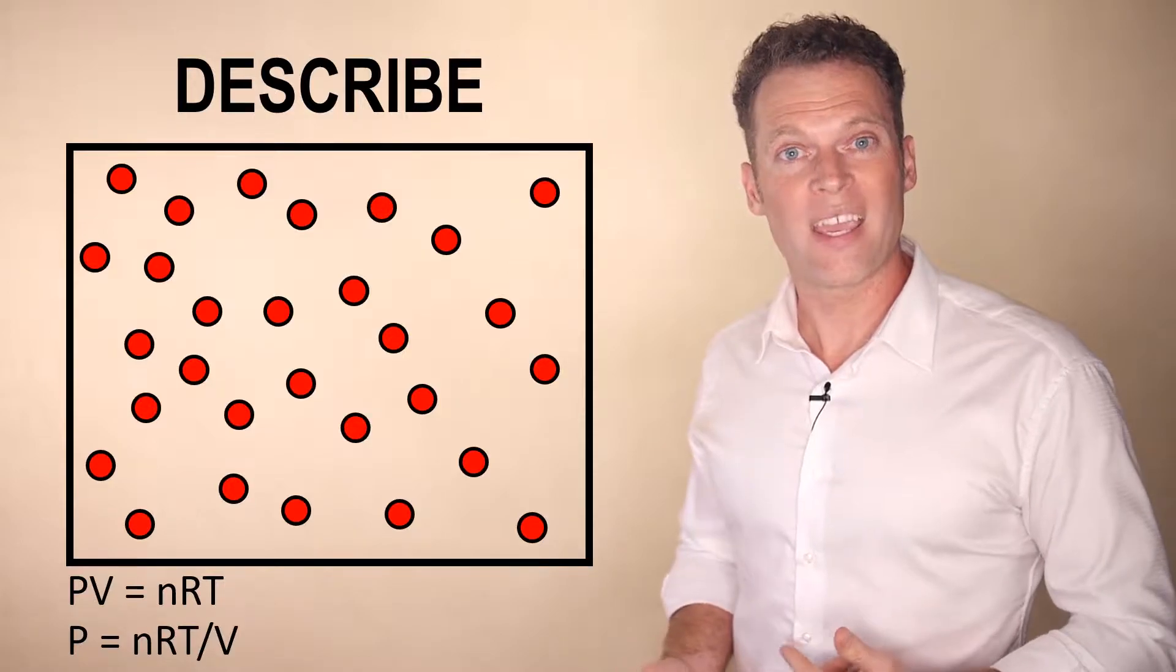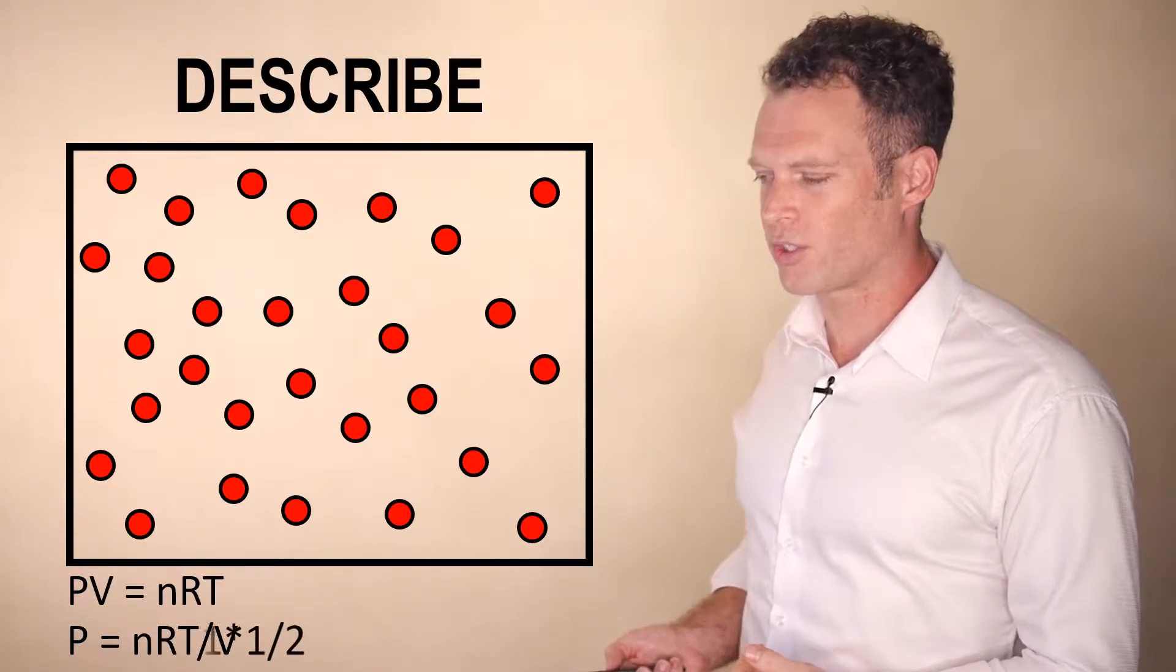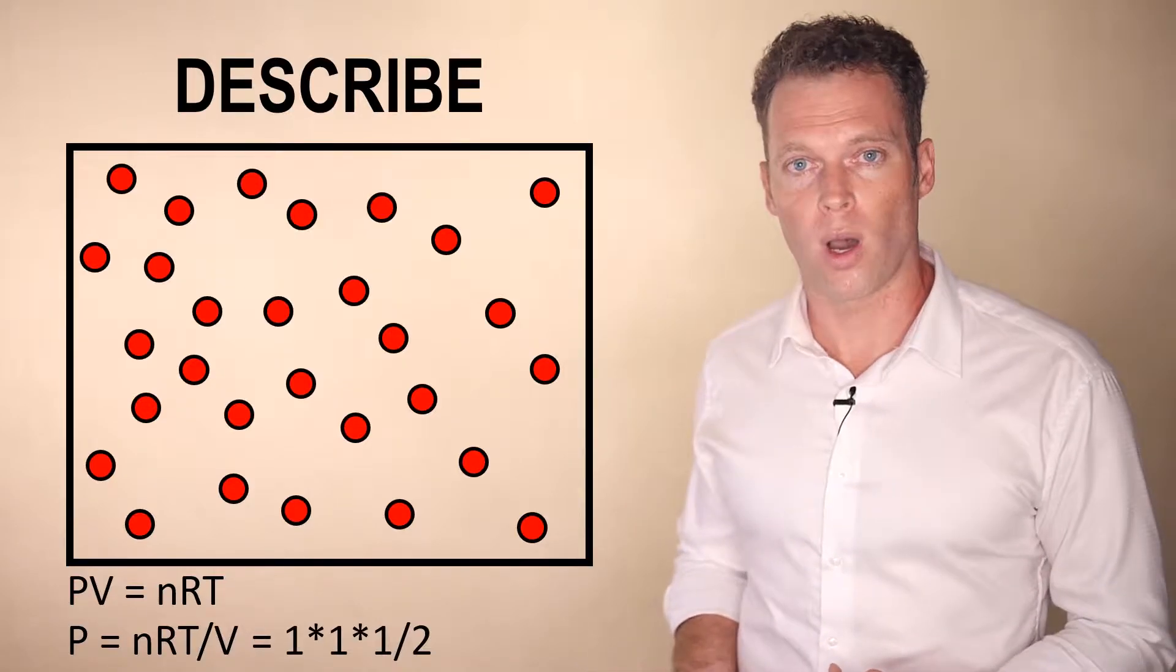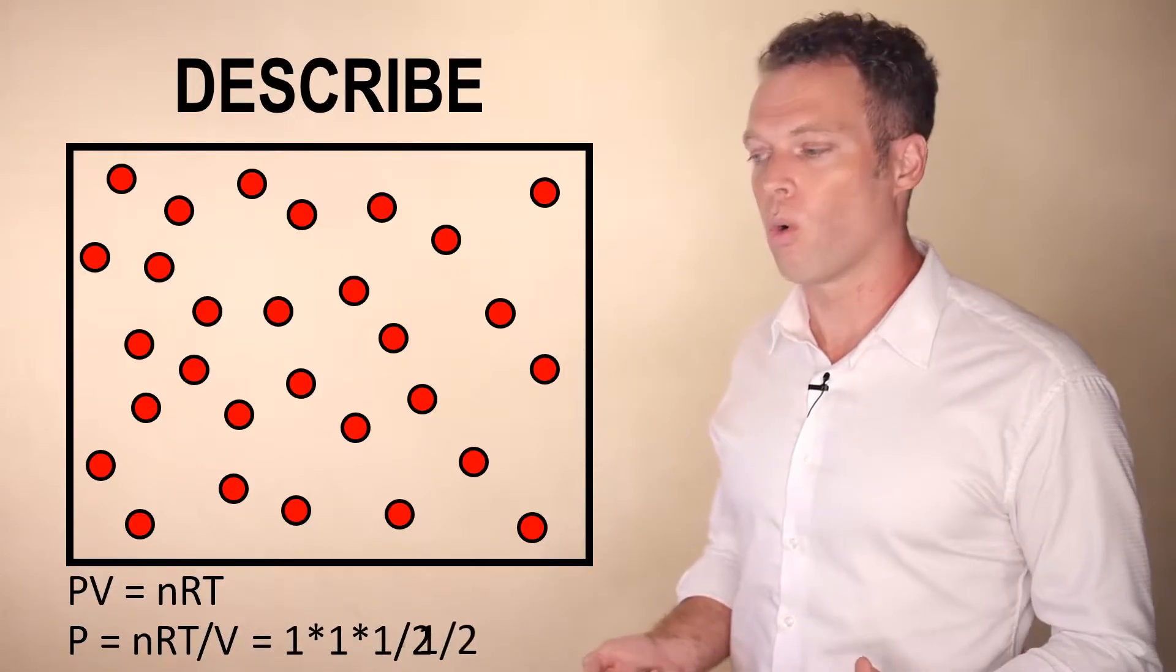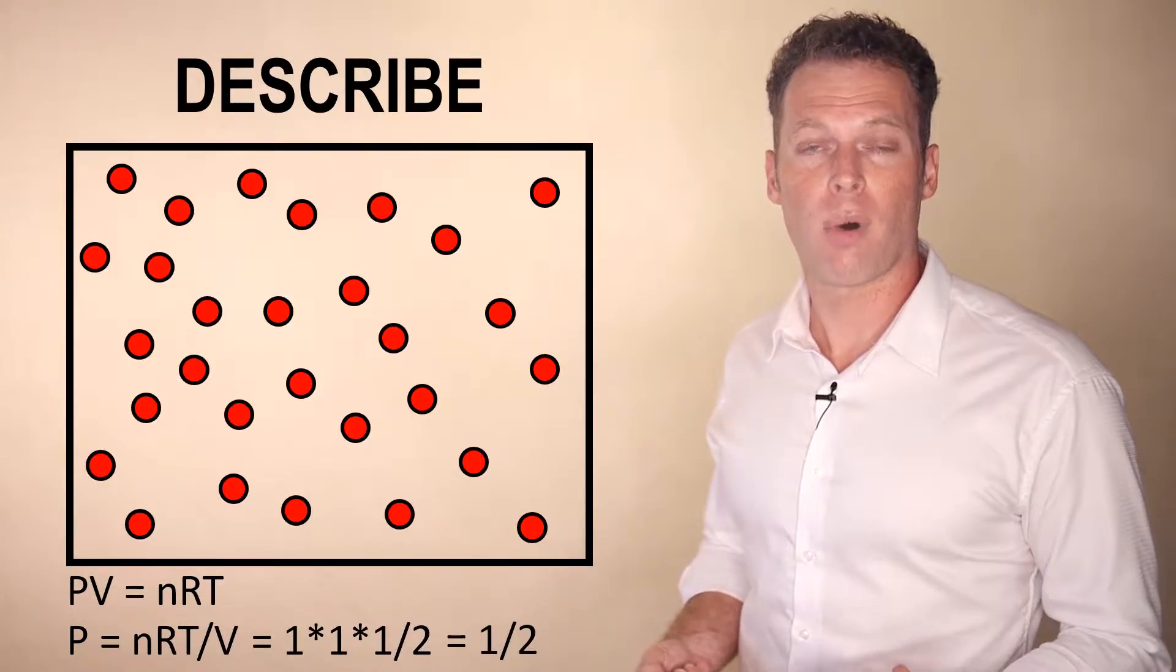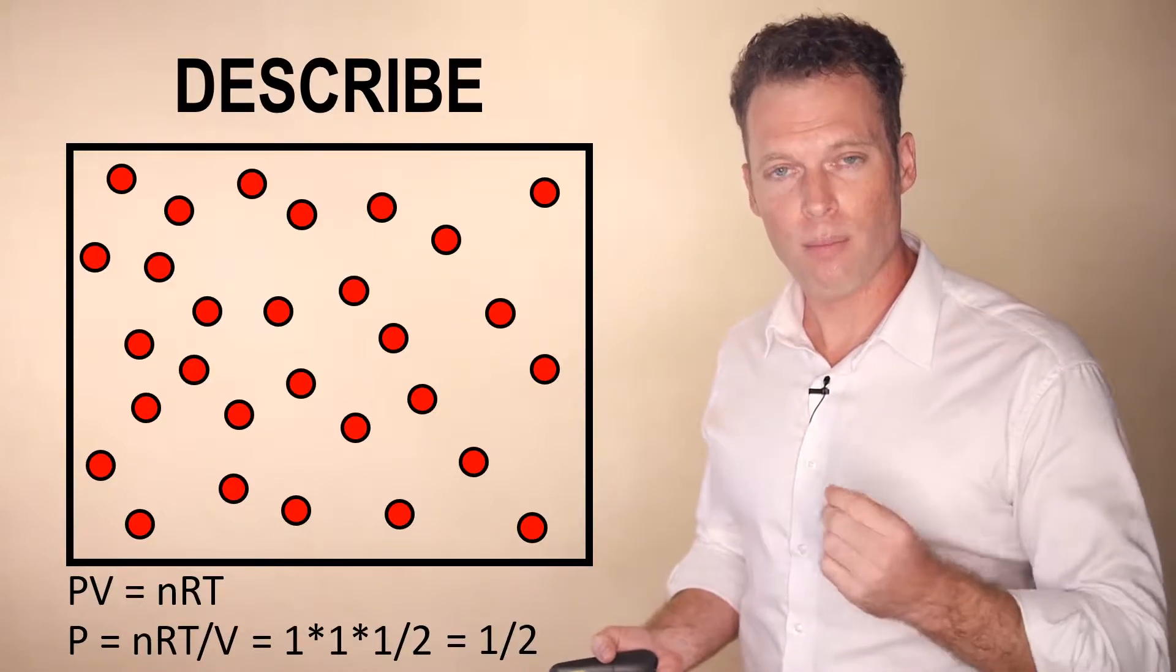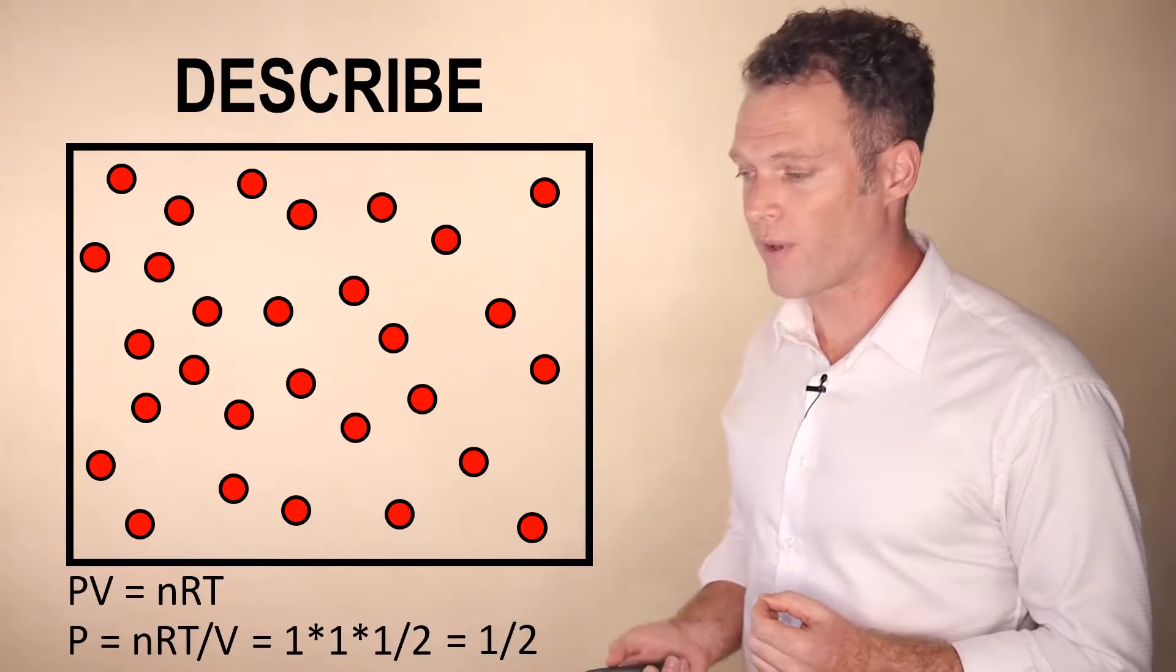We do know the volume increased by a factor of two. And so a simple representation of how the pressure changed is 1 times 1 times 1 times 1 divided by 2, or 1 half. We can conclude that the pressure decreased by 1 half. And this is given a general understanding of gases based on a number of observations.